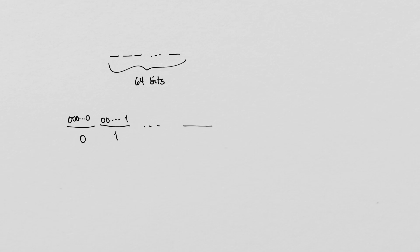If we have 64 bits instead of 3, then we can use the same scheme to represent every number from minus 2 to the 63 up to 2 to the 63 minus 1. This is the standard system for representing integers on a computer.